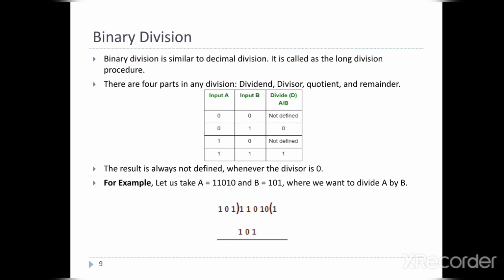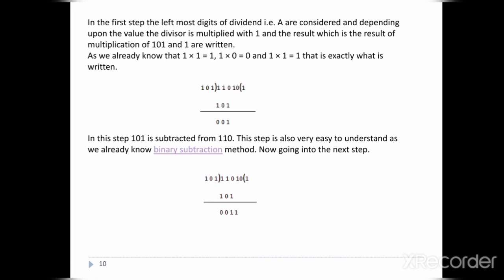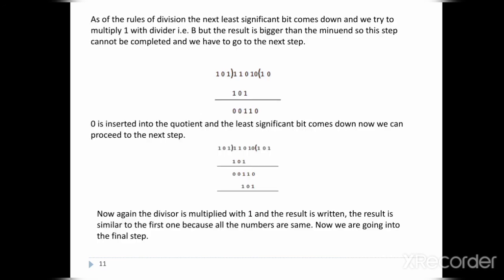Let us take A = 11010 and B = 101, and we want to divide A by B. In the first step, the leftmost digits of the dividend are considered. Depending on the value, the divisor is multiplied by 1, and the result of 101 times 1 is written as 101. Then 101 is subtracted from 110 using binary subtraction. In the next step, following division rules, the next least significant bit comes down.